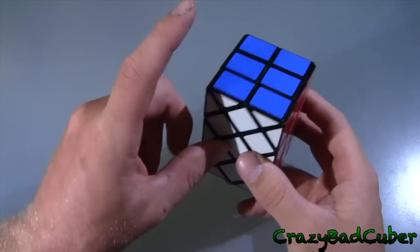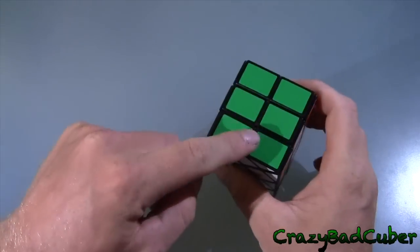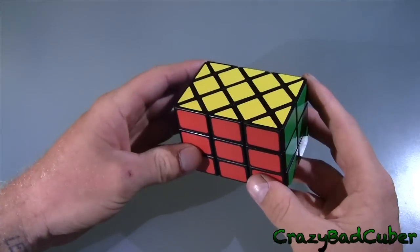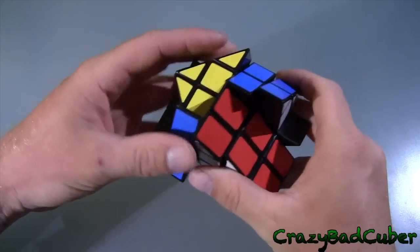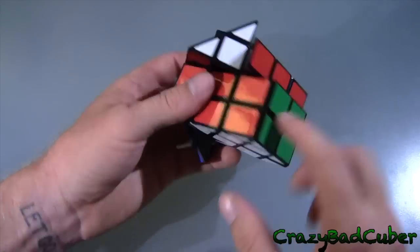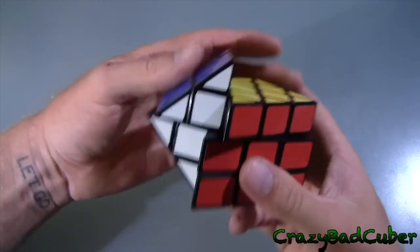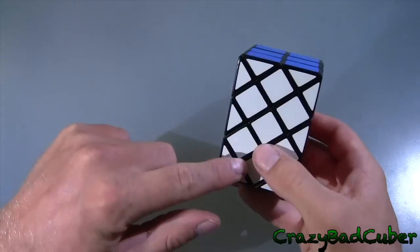However, you can replace this blue side with the green side. Now you can't solve it like that, but you can take this whole blue section out and put it in the green, and then put the green in here just for the first two layers.